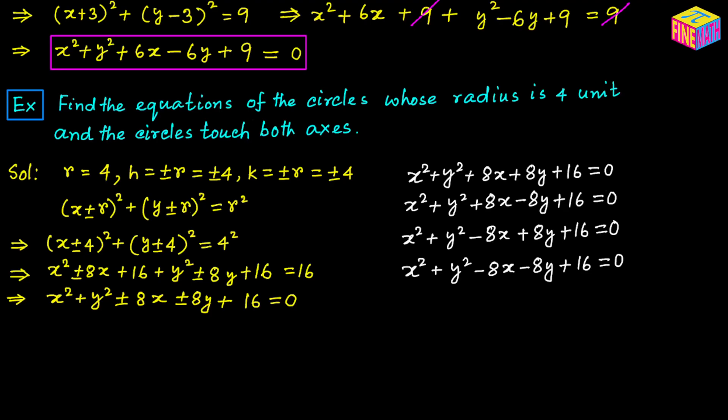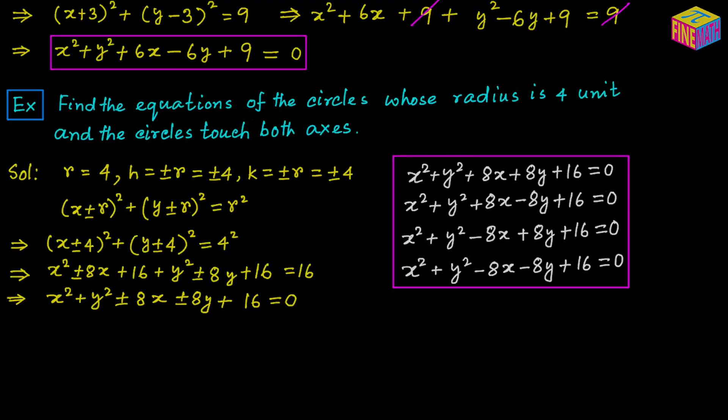Those are the four possible equations for a circle whose radius is four units and touches both axes. Your answer should include all four equations. I hope everything made sense. Thank you for watching — see you in the next video.